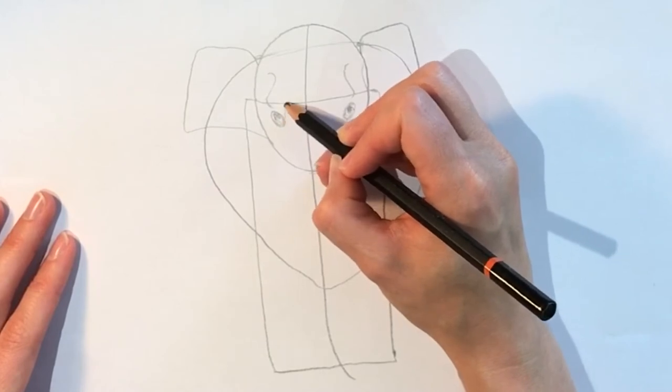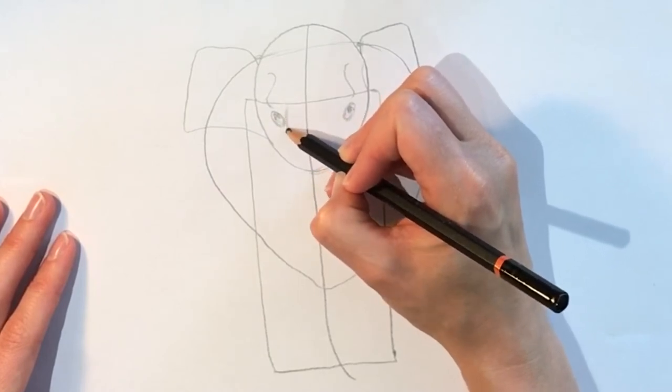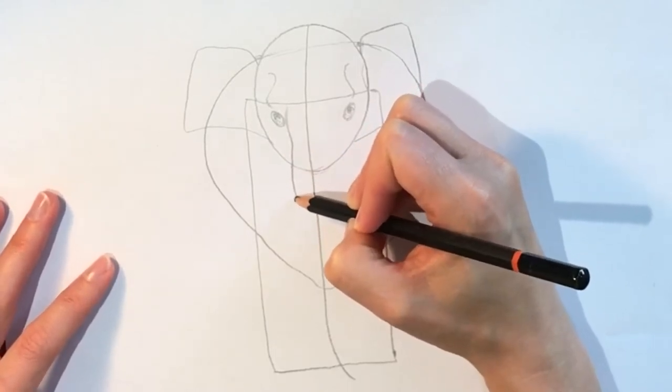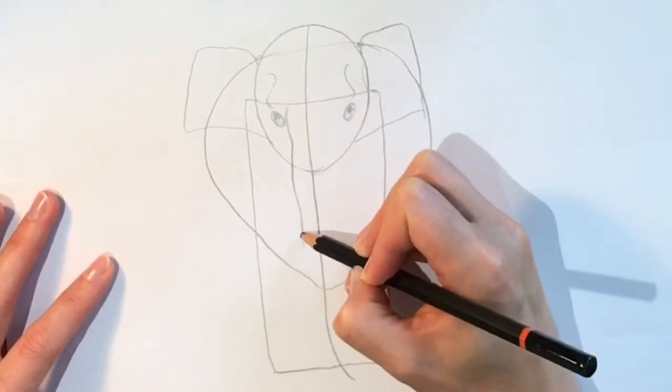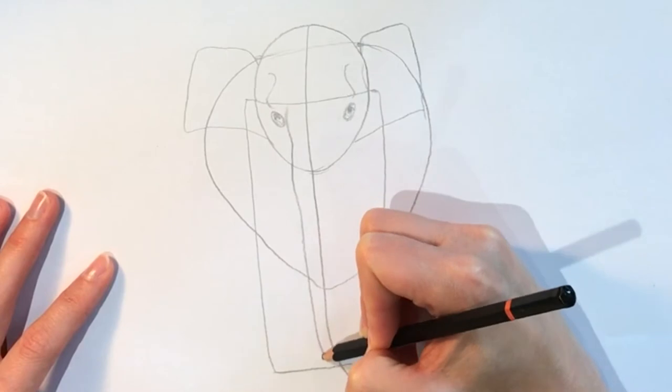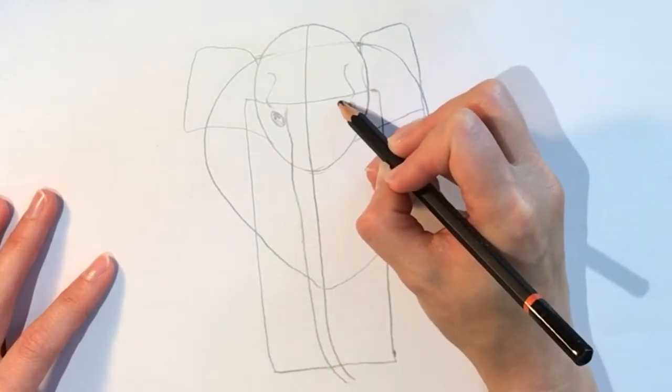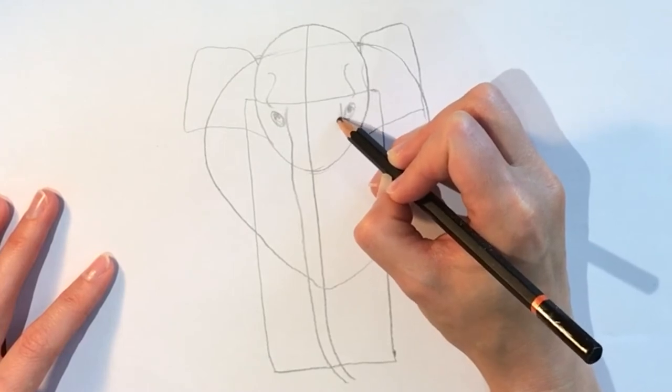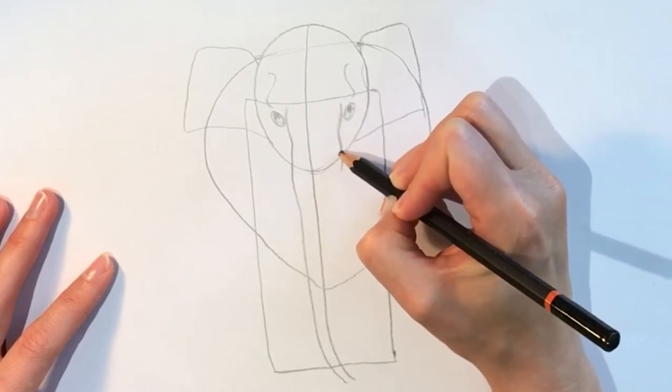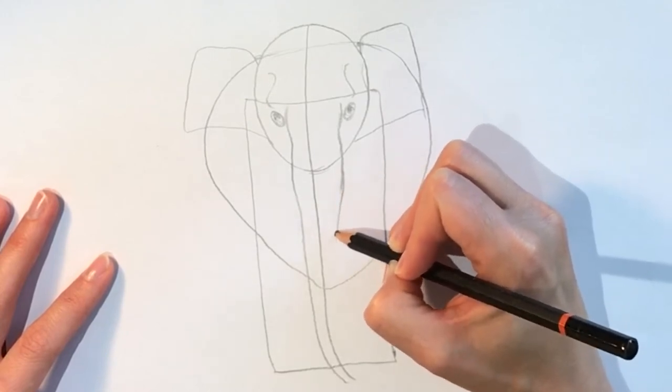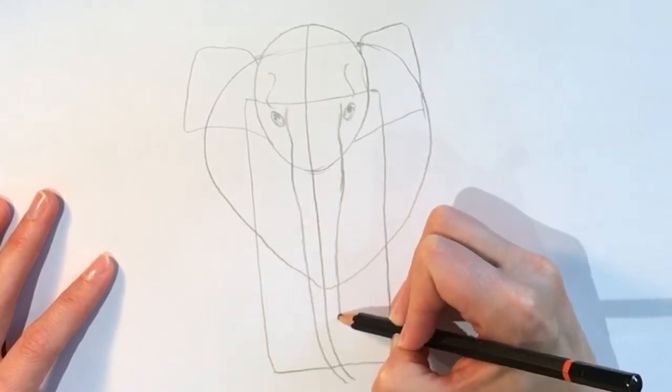So this is where the trunk's going to start. So the trunk kind of goes in and out again, all the way down. And the same on the other side, goes in and then out again, and all the way down.